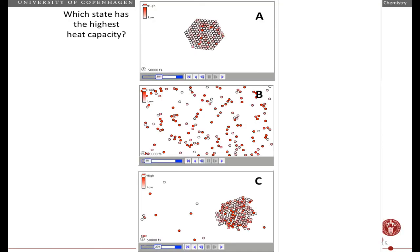So here's a question for you. Here is a picture of three different states taken from the simulation, and the question is, for which state is the heat capacity highest? So press the pause button, think about it, and when you're ready to answer, press play.